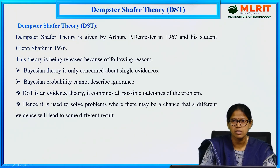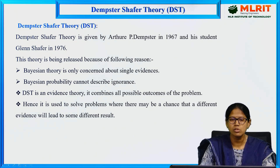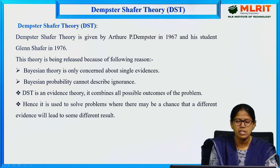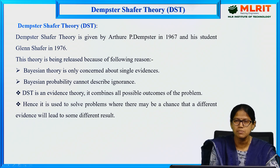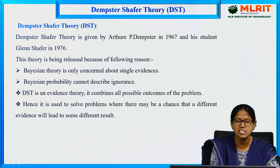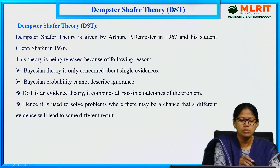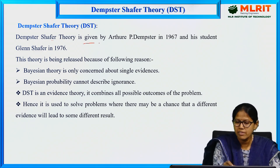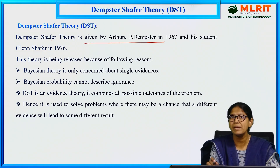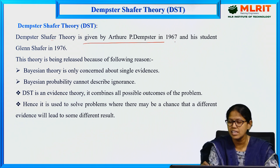Let us see the introduction part. The Dempster-Shafer theory is named after two scientists — one is Dempster and another one is Glenn Shafer. Glenn Shafer is a scholar of Dempster. The Dempster-Shafer theory was given by Arthur P. Dempster in 1967.